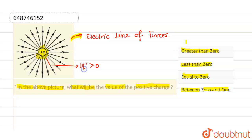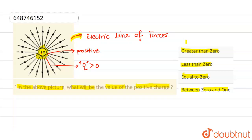The value of charge will be greater than zero because the charge is positive, and all positive quantities are greater than zero. It will not be equal to zero because if Q equals zero, then no electric line of force will come out. It cannot be less than zero because then the electric lines of force would merge onto the charge, not come out from it.